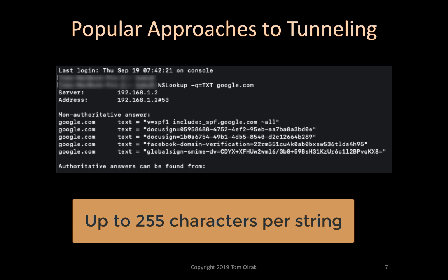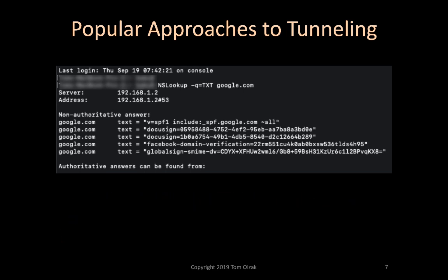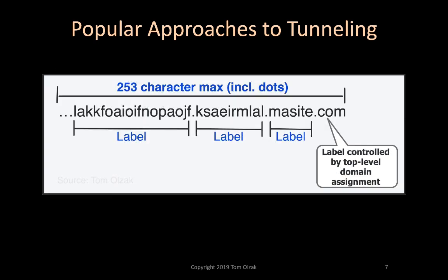This slide shows types of information that might be contained in an authorized text record. When using the domain name, or queue name, the MA prepends encoded information onto the queue name label space. This slide shows how this is possible. The maximum length of the entire queue name is 253 characters, including the dots. Each label in the queue name can be up to 63 characters.